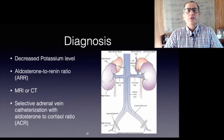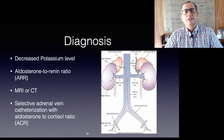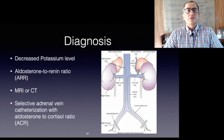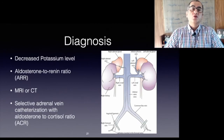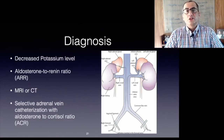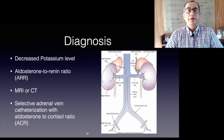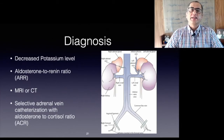An apparent unilateral mass could be a non-functioning tumor in a patient with bilateral micronodular hyperplasia; therefore selective adrenal vein catheterization is warranted before deciding on surgical or non-surgical treatment. During selective adrenal vein catheterization, samples are obtained from the vena cava and from both adrenal veins, and the aldosterone-to-cortisol ratio is determined in each sample. A significant difference in the ACR ratio on one side indicates unilateral disease.